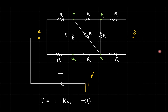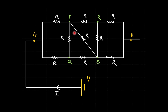To find the equivalent resistance between A and B, I'll put a battery of voltage V and let the battery send a current I. If the equivalent resistance between A and B is R_ab, the battery will sense that there is a single resistor R_ab between A and B, and accordingly it will send a current I such that V equals I times R_ab. Now, if the resistor between P and S were not there, this would be a straightforward Wheatstone bridge.